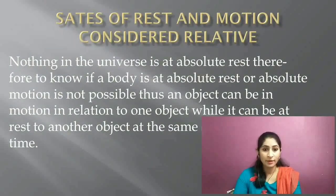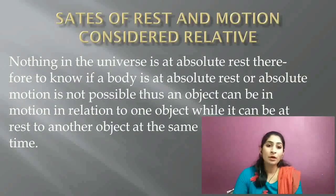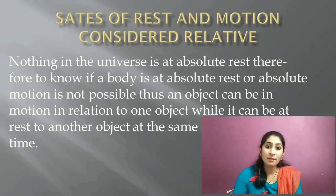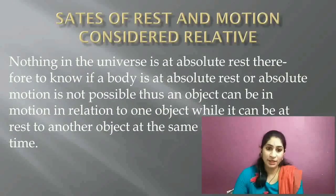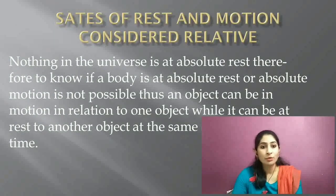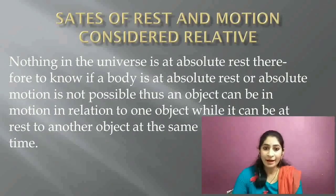For example, suppose we are sitting in a moving train — we are in motion with respect to people or objects outside the train. However, with respect to the objects, people, walls, and fans inside the train, we are at rest. So one object can be at rest and in motion at the same time relative to different objects — that is why rest and motion are relative terms.